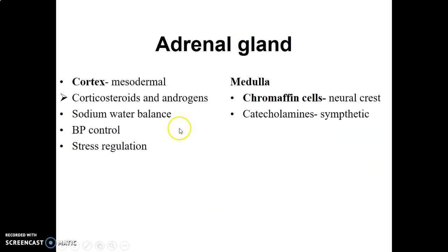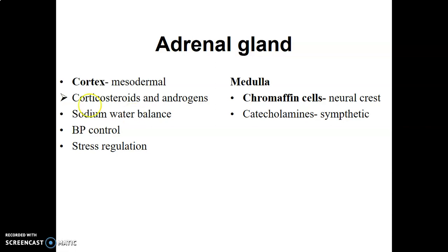The adrenal gland has a cortex and a medulla. The cortex comes from mesoderm and it produces corticosteroids and androgens — mineralocorticoid and glucocorticoid — which help with sodium and water balance. The mineralocorticoid, aldosterone, helps with sodium reabsorption at the distal convoluted tubules of the kidney, and this sodium-water balance helps with control of blood pressure.